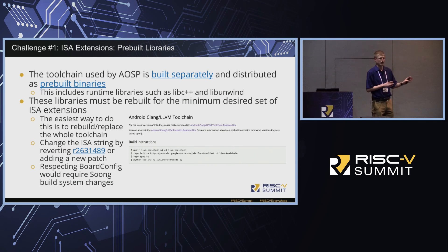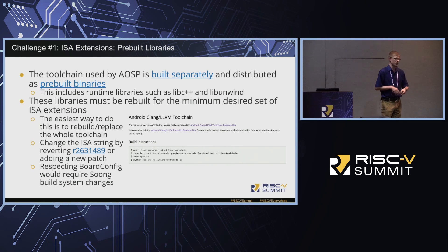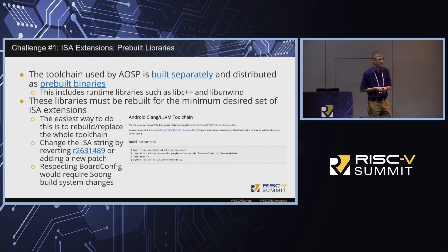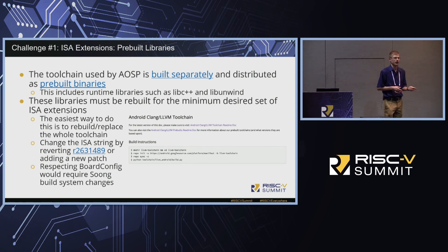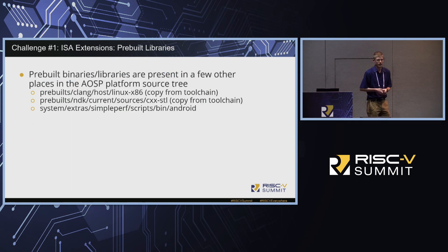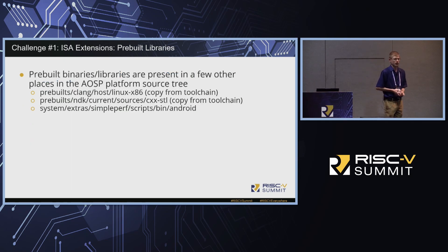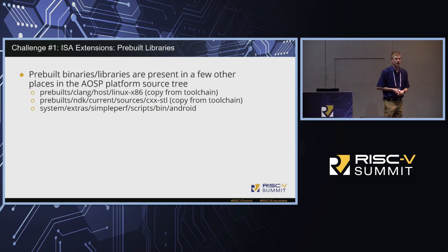This is one case where you can't easily have multiple versions — it would require significant build system changes to select between them at build time. For now, we've set the minimum to RV64GC internally because that's the minimum ISA we're targeting. There are also a couple of other places where pre-built libraries need to be copied from the toolchain builder when building the AOSP platform.